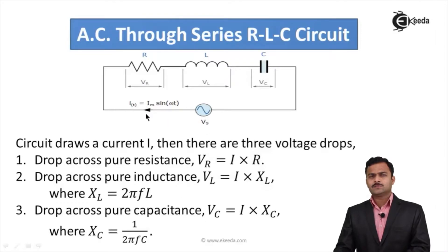This I is responsible for three voltage drops. One drop is across a pure resistance given by I into R. Second drop across pure inductance Vl equal to I into xl where xl is inductive reactance given by 2 pi fl.